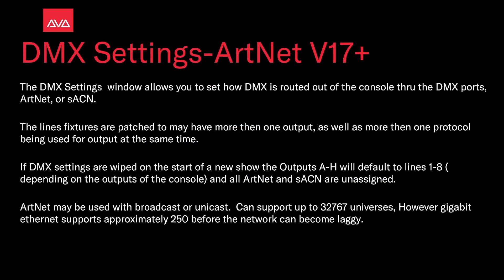The DMX settings window allows you to set how DMX is routed out of the console through the DMX ports, ArtNet, or streaming ACN. The lines features that are patched to may have more than one output as well as more than one protocol being used for the output at the same time. If DMX settings are wiped on the start of a new show, the outputs A through H default to lines one through eight depending on the outputs of the console, and all ArtNet and streaming ACN are unassigned.